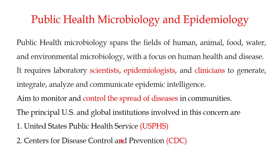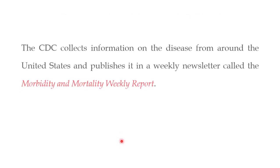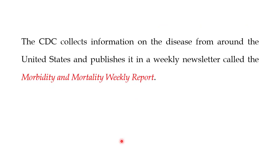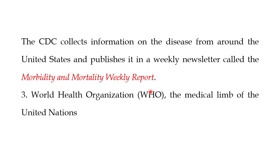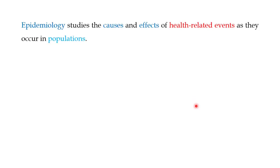The second institution is the Centers for Disease Control and Prevention — the CDC — which collects information on disease from around the United States and publishes it in a weekly newsletter known as the Morbidity and Mortality Weekly Report. The third is the World Health Organization, which is the medical arm of the United Nations, and is involved in controlling the spread of disease and designing strategies across the globe.